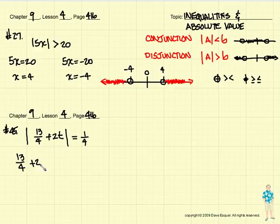The first one is 13 over 4 plus 2t is equal to 1 fourth. And then the second one is 13 over 4 plus 2t turns out to be negative 1 fourth.